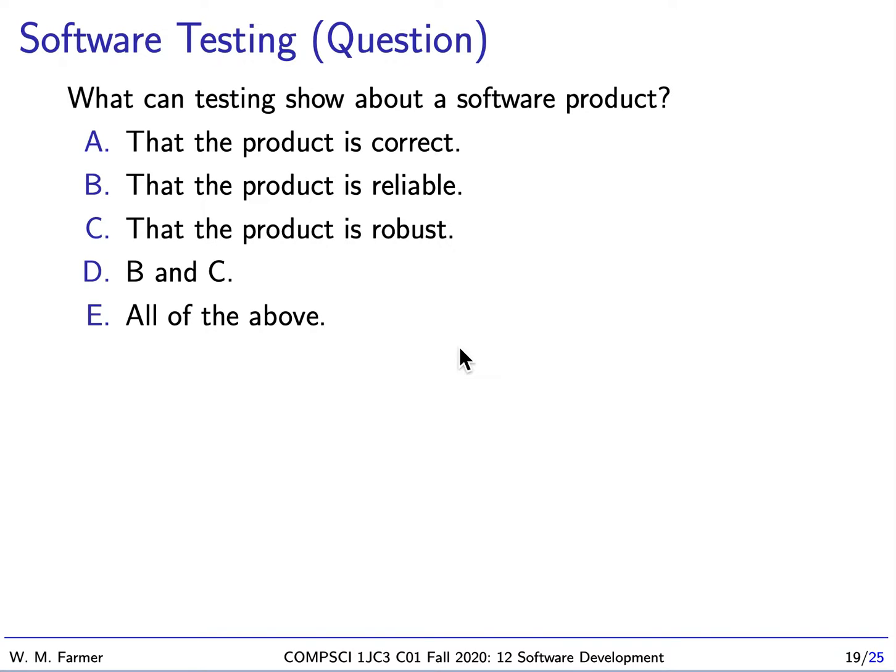Welcome back to McMaster University course, Computer Science 1JC3, Introduction to Computational Thinking. I am Bill Farmer, and we're going to continue with the topic of software development.